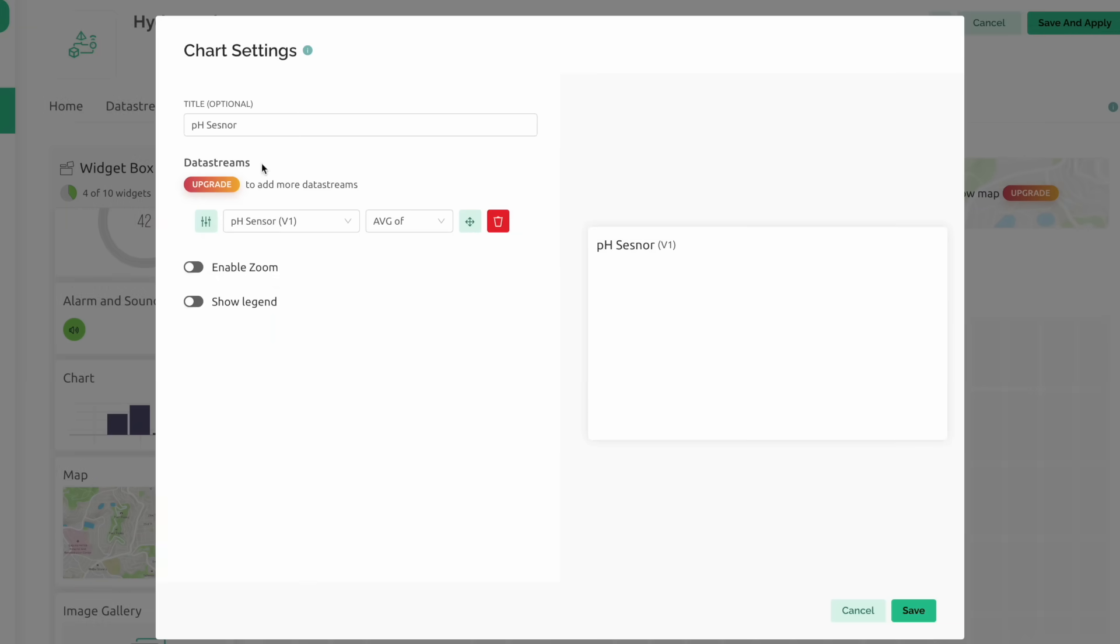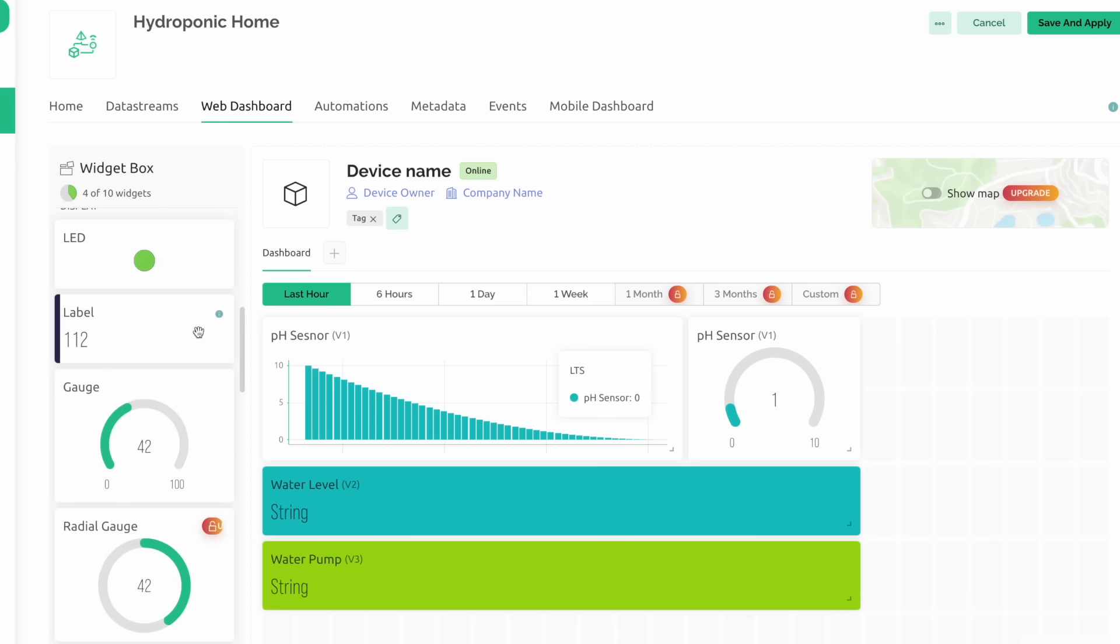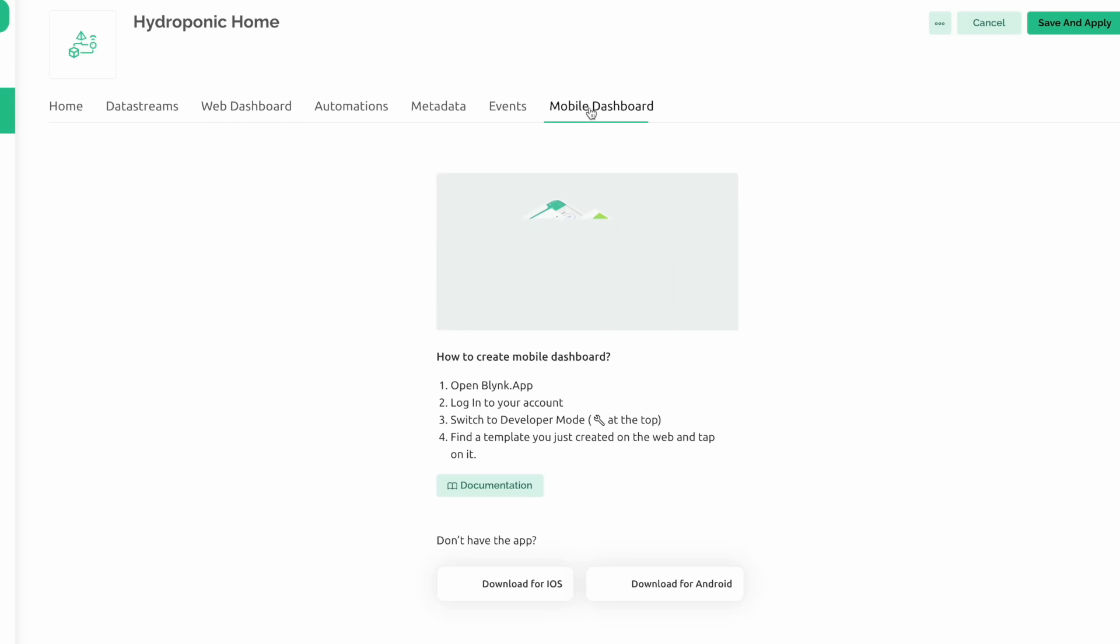In the dashboard section, add a chart and a gauge for the pH sensor, then a label for the water level and motor status. Besides the web browser, you can create this template in the smart device app and monitor the system.